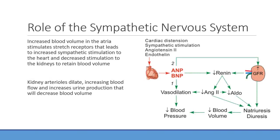Looking at the role of the sympathetic nervous system in blood volume: the kidneys are a big factor because they produce urine. The heart's atria also release a hormone. Key hormones to understand are the renin-angiotensin-aldosterone system (RAAS), antidiuretic hormone (ADH), and atrial natriuretic peptide (ANP) — understanding these is essential for managing patients with increased or decreased blood volume and its effects on blood pressure.